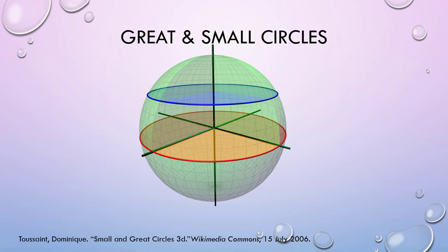The first thing we're going to talk about is great and small circles. If you're looking at a diagram of the Earth and it's been split, this is where great and small circles come into play. Our blue circle in the diagram is a small circle. Small circles are circles that cut the Earth into pieces but don't use the center of the Earth as the center of the actual circle.